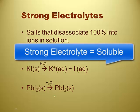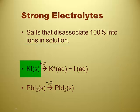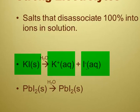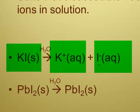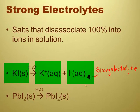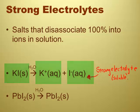So a strong electrolyte is one that dissociates 100%, kind of like potassium iodide here. Potassium iodide, when you place it in water, completely dissociates into potassium ions and iodide ions. So potassium iodide is a solid. All salts are solid at room temperature, and we're making an aqueous solution of potassium iodide. When we throw the solid potassium iodide into the water, it will dissociate 100% into its potassium and iodide ions. There will be no potassium iodide solid in it at all — just the ions.